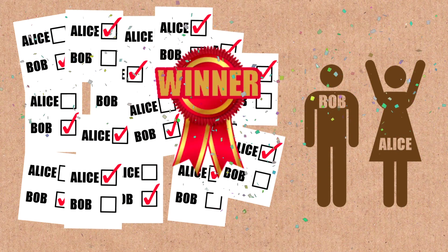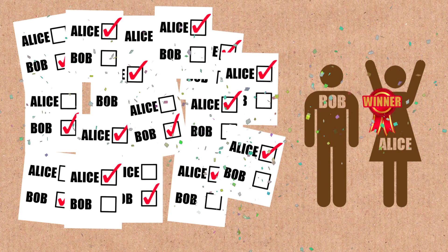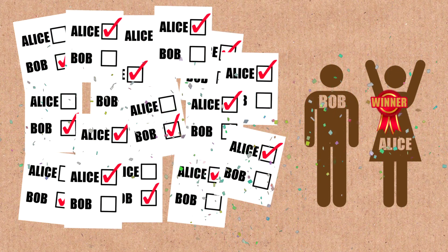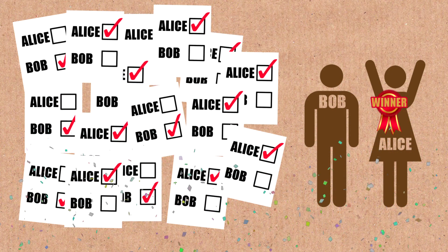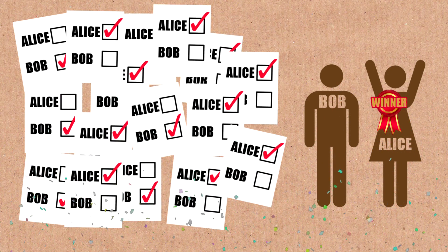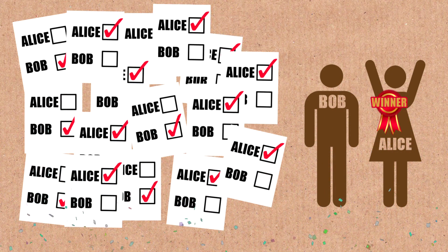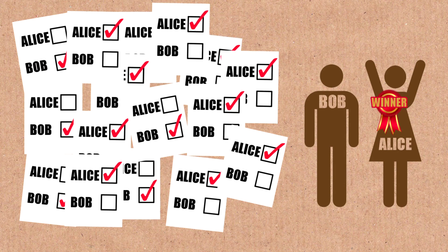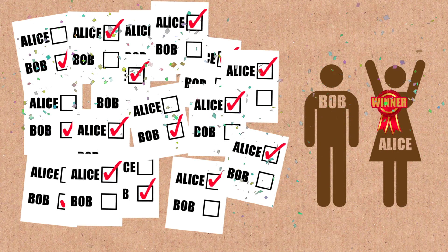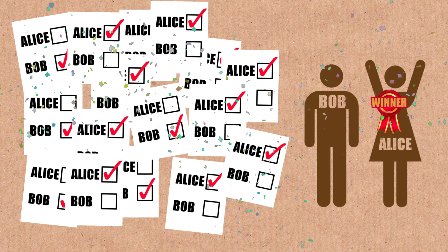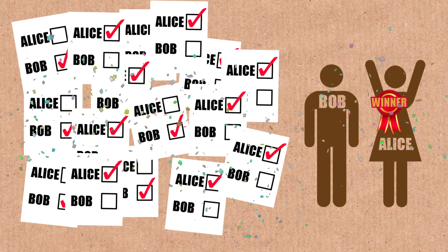Somebody's counted the paper ballots and announced the result, but you might still be a bit skeptical. You should be skeptical — this is important. The loser will be skeptical anyway, for sure. And so you want to process a post-election audit, as we call it, for really convincing the loser that the announced result is the right result.